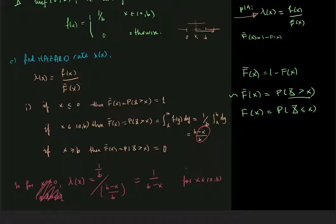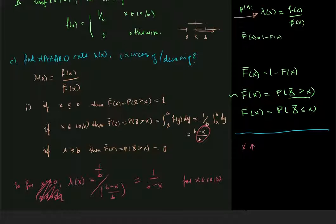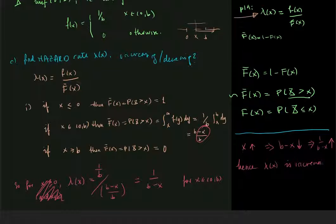We are also asked whether the hazard rate is increasing or decreasing. As x gets larger, b minus x gets smaller, so 1 over (b minus x) gets larger. Hence lambda of x is increasing in x.